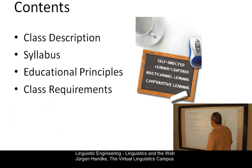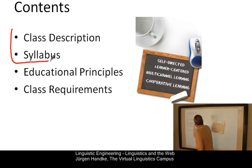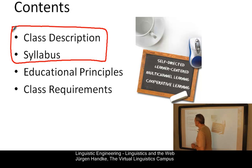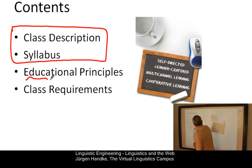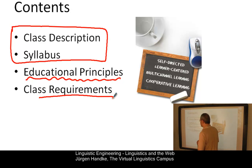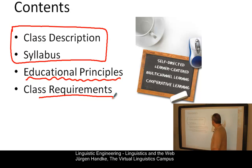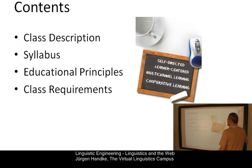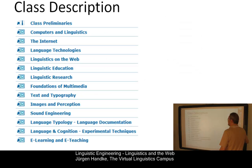First, we will look at the content of the class and its syllabus. Then we will provide an overview of the educational principles and will finally list the requirements students have to fulfill in order to get the class credits. The class is subdivided into three central parts.